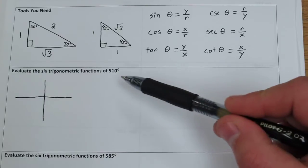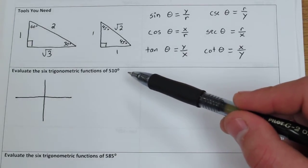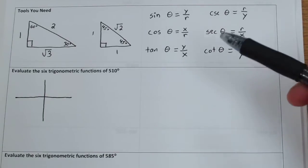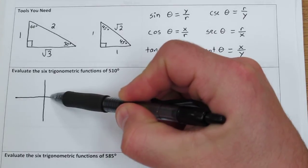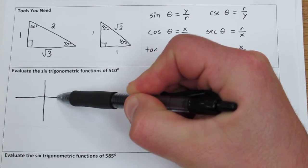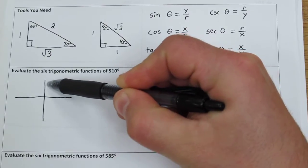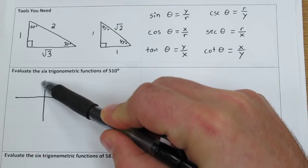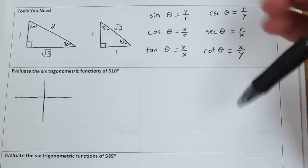Let's start with this one. Evaluate the six trigonometric functions of 510 degrees. The first thing we need to do is figure out where 510 degrees is. If we start here and go all the way around once, that's 360 degrees. Another 90 degrees gets us to 450, and another 60 degrees past that would get us to 510.